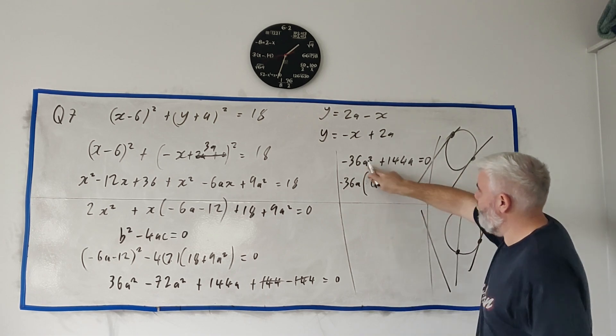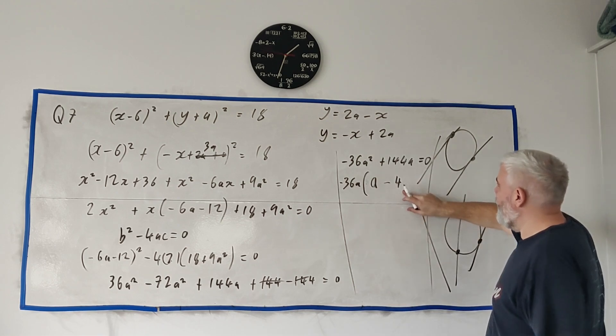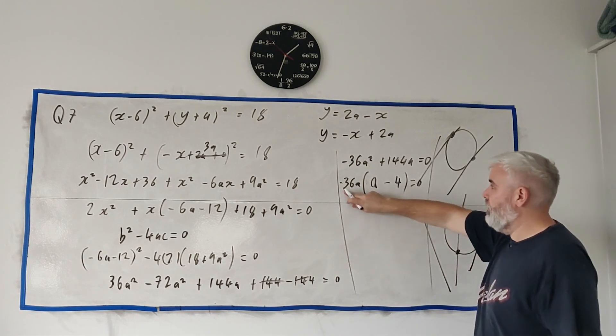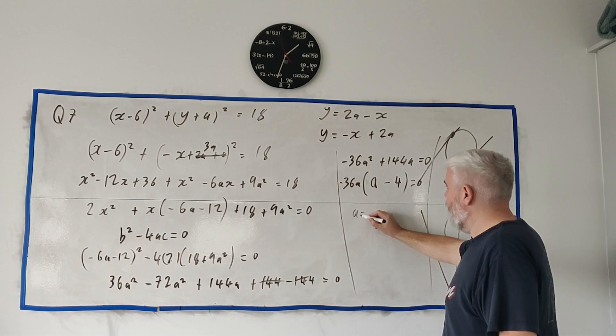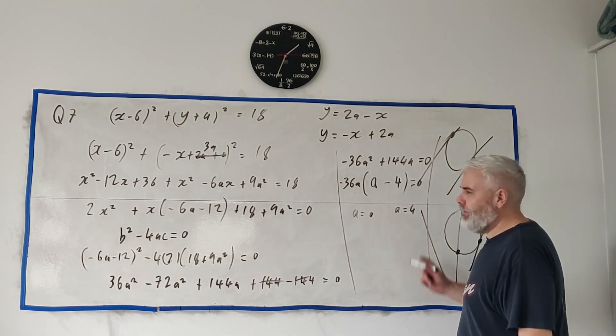That's one A times here, because it leaves an A left over going into this. It leaves a minus 4 left over going into that. So A is either minus 36 A is 0, so that means A is 0, or A is 4. They're the two possible answers, and that's it.